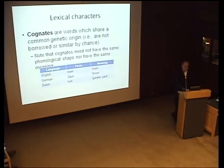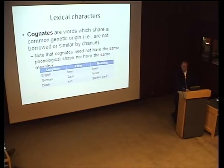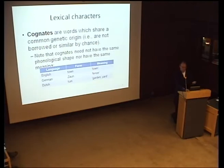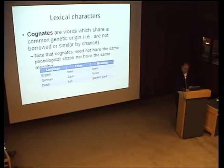It's important to note that cognates need not have the same phonetic shape — they don't need to sound the same, and they don't need to have the same meaning. For example, English 'town,' German 'Zaun,' and Dutch 'tuin' all share the same origin, essentially an enclosure, but now mean town, fence, and garden respectively. Irish 'dún' means fort. Cognates need not mean the same thing or sound the same.